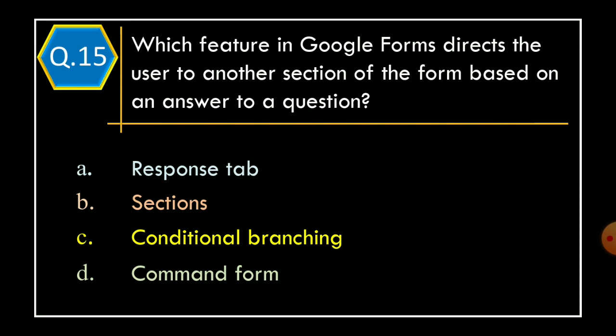Question 15. Which feature in Google Forms directs the user to another section of the form based on an answer to a question? Option A, Response Tab; Option B, Sections; Option C, Conditional Branching; Option D, Command Form. And the correct option is Option C, Conditional Branching.